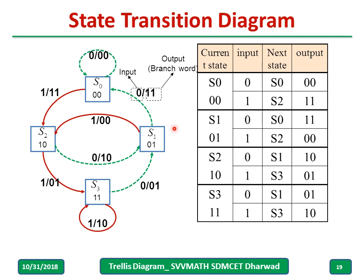The state transition diagram is drawn using the next state table and output table. When the current state is S0 (00) and input is 0, the next state is S0 (00) and the output is 00. When current state is S0 and input is 1, the next state is S2 (10) and the output is 11, so an arrow goes from S0 to S2 labeled 1/11.